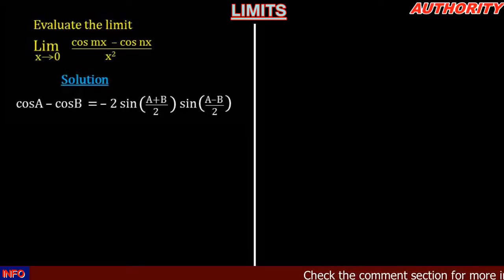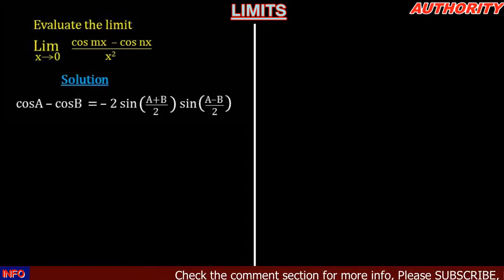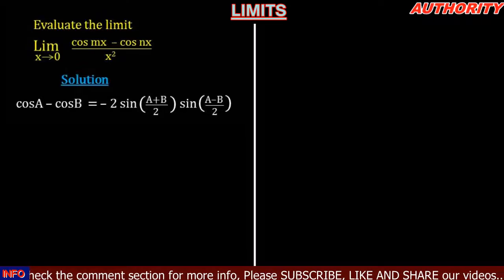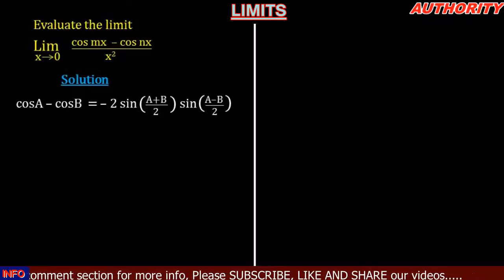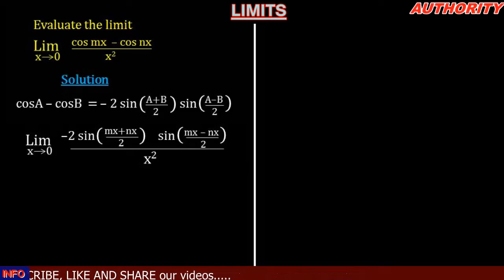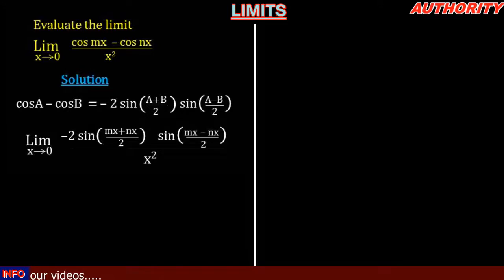In this problem, we let mx be called A and nx be called B. So cos A minus cos B gives us the limit as x approaches zero of minus two sine of (mx plus nx) all over two, times sine of (mx minus nx) all over two, all over x squared.